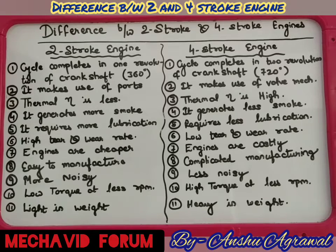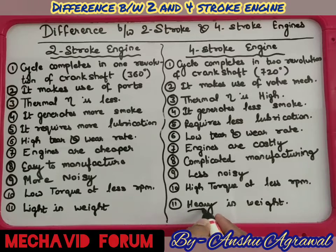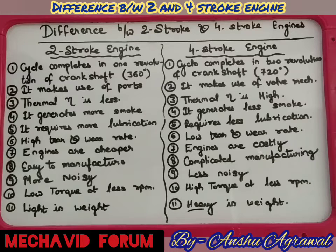The last difference is weight. Two-stroke engines are lighter because they are smaller in size and use fewer components, resulting in a lower overall weight. Four-stroke engines are heavier because they incorporate more components such as tappets, springs, a valve mechanism, a larger flywheel to control it, and many other attachments, all of which increase the total weight.